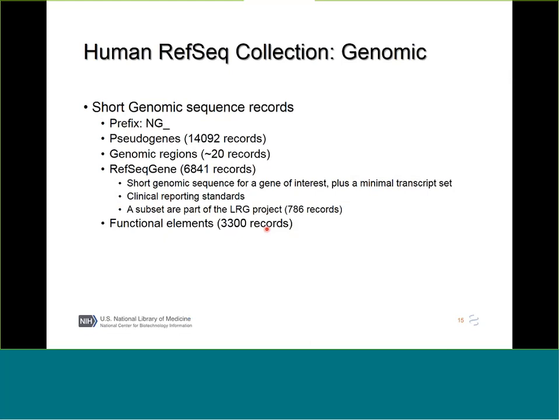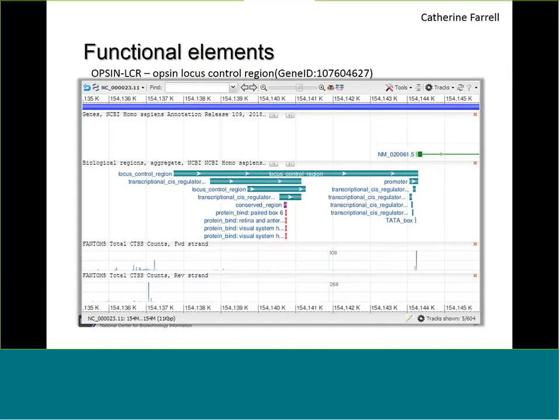We also have a new project annotating functional elements, started by Katherine Farrell here. What this project is striving to do is annotate regions of regulatory features and other features on the genome that have demonstrated experimental support. For example, the Opsin gene — we're annotating a locus control region and a variety of features upstream of it, which may be useful for clinical interpretation. This project keeps expanding and we have information available for a few thousand genes at this point.